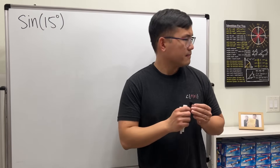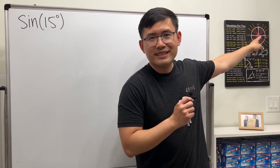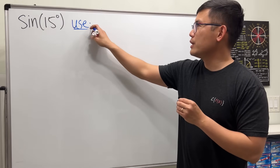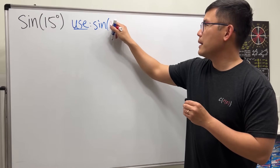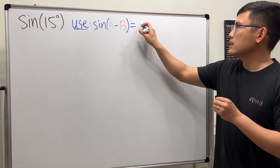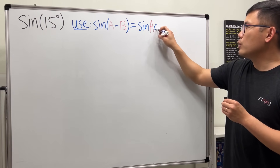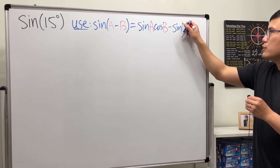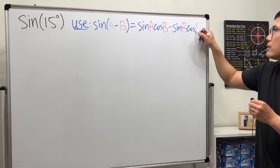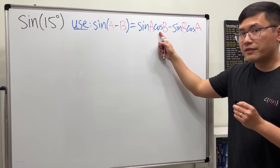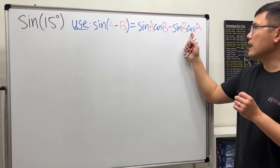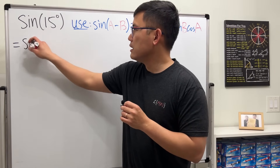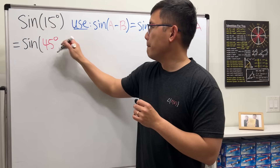For sine of 15 degrees, we know that 45 degrees and 30 degrees are special angles, and we know there is the angle difference formula. So we can just use that: sine of (a minus b) equals sine of a times cosine of b, minus sine of b times cosine of a. That's how I remember it. To give 15 degrees, we can look at this as 45 degrees minus 30 degrees.